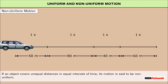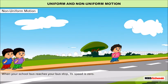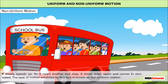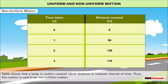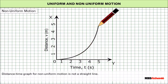Non-uniform motion: if an object covers unequal distances in equal intervals of time, its motion is said to be non-uniform. When a school bus reaches a bus stop its speed is zero; it slowly speeds up, and as it nears another bus stop it slows down again to zero. The table shows a body covering unequal distances in equal intervals of time, thus this is non-uniform motion. The distance-time graph for non-uniform motion is not a straight line.